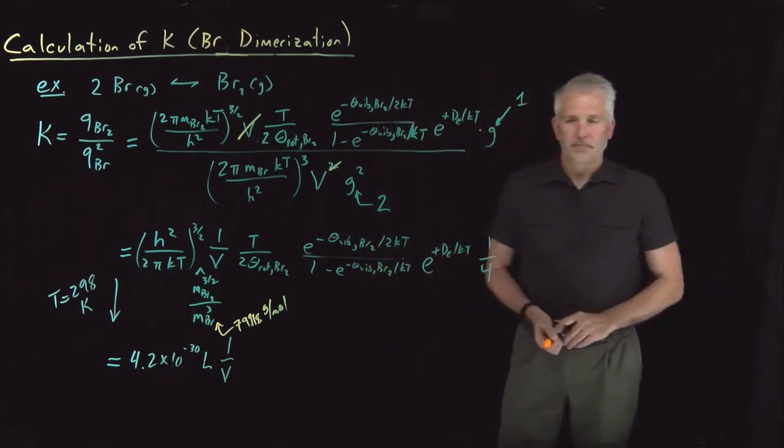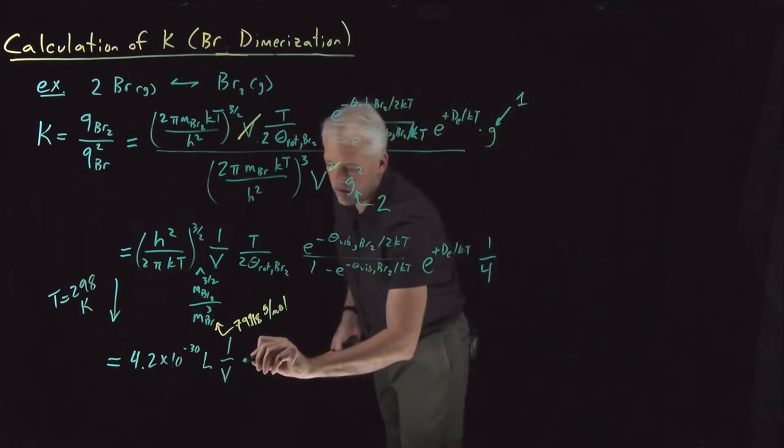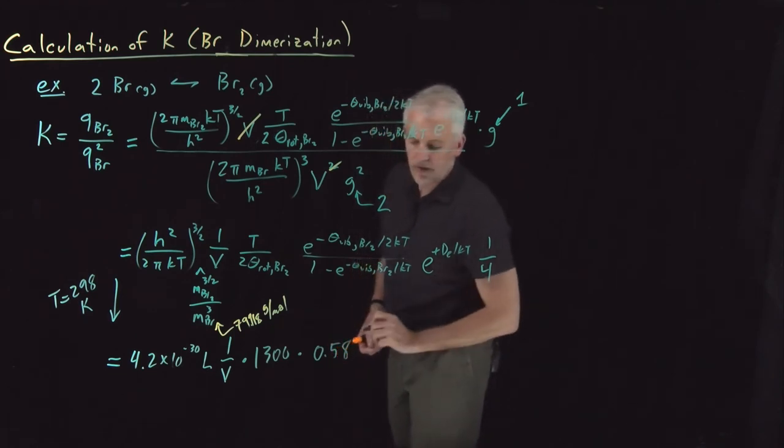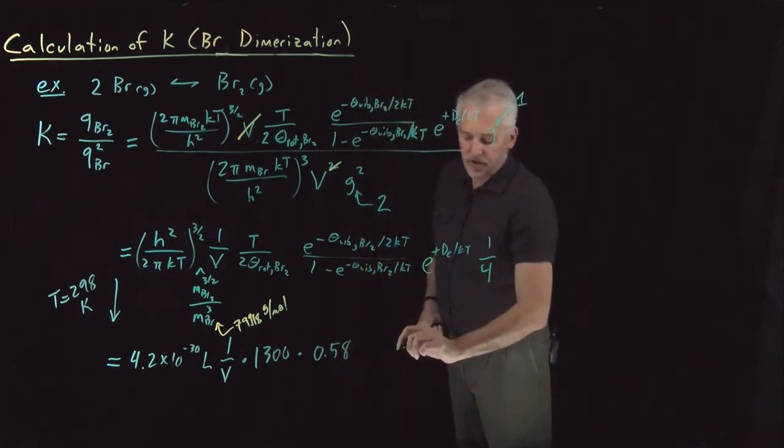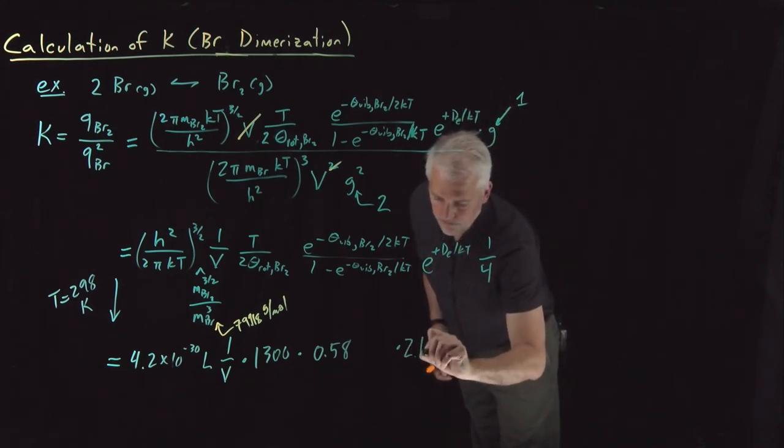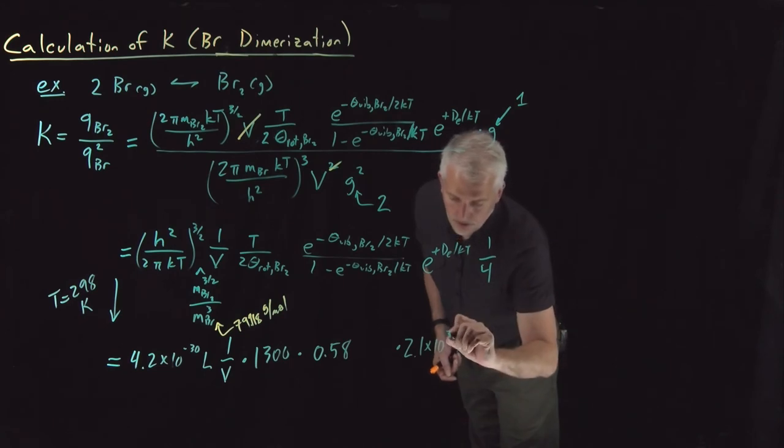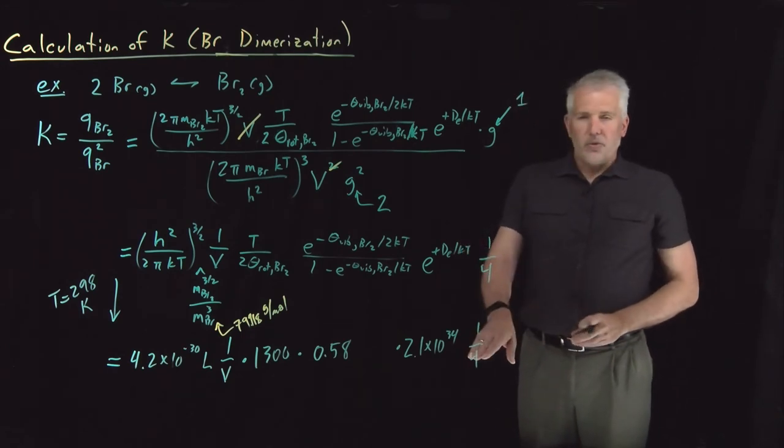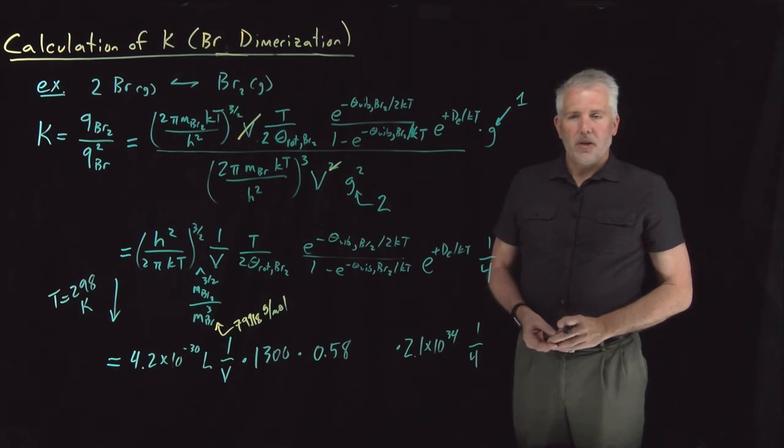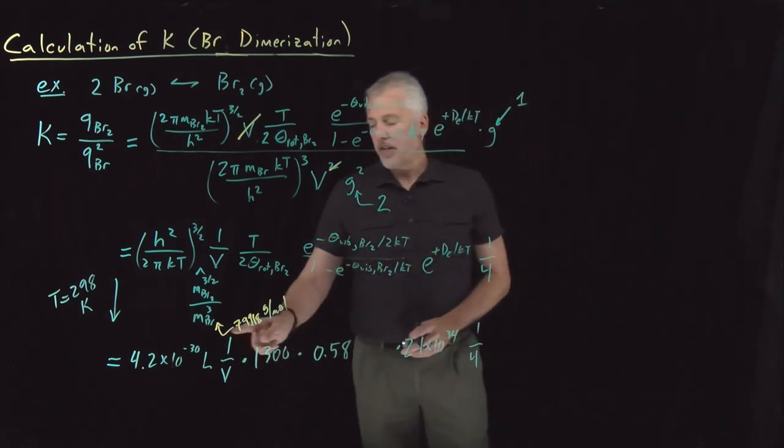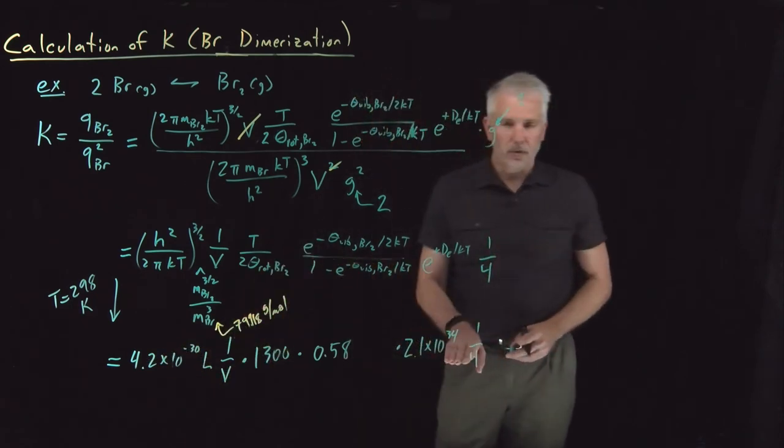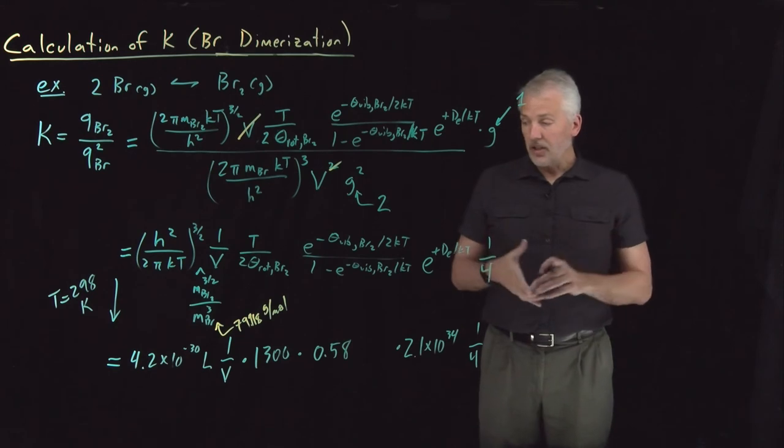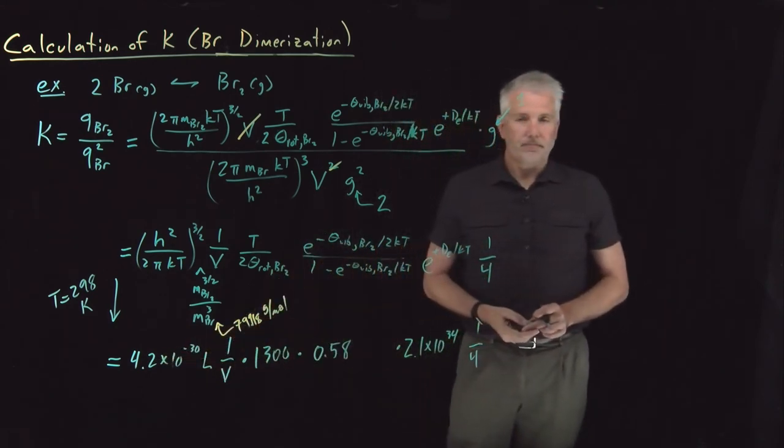The rotational term is 1,300. The vibrational term is 0.58. The bond dissociation energy contributes a very large contribution, 2.1 times 10 to the 34th. That number is unitless. And then we have a 1 over 4 from the electronic degeneracy. So notice we're in a different situation now than we were for the HBr formation reaction. Because of this lack of cancellation, we've got this 1 over v term. We can't finish the arithmetic until we know what volume we're interested in. So if I throw some bromine atoms into a box with volume 1 liter, and I use 1 liter here, then I can evaluate the constant.